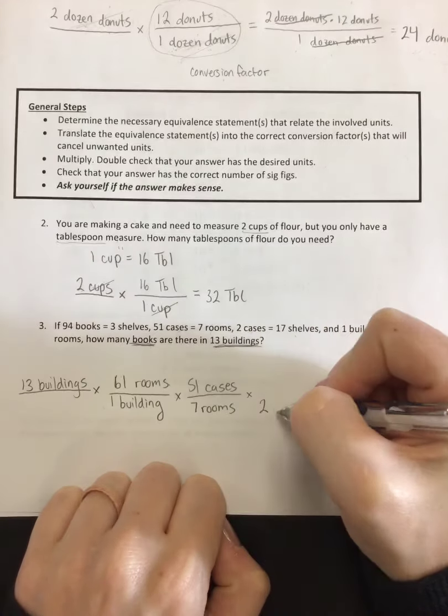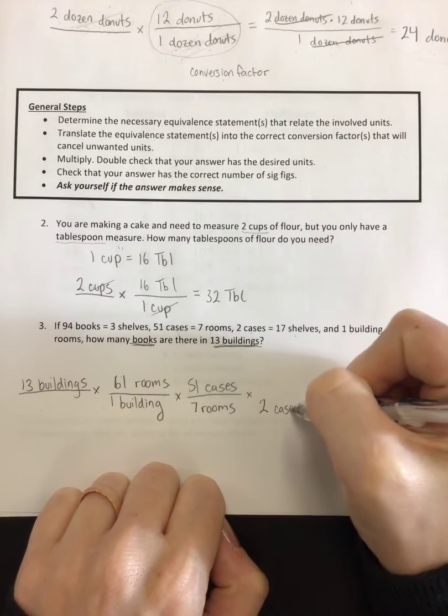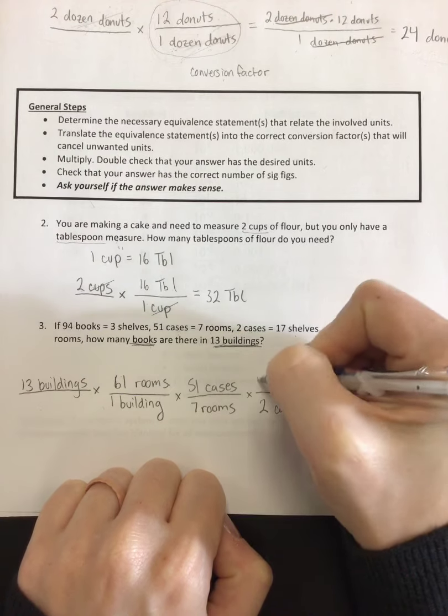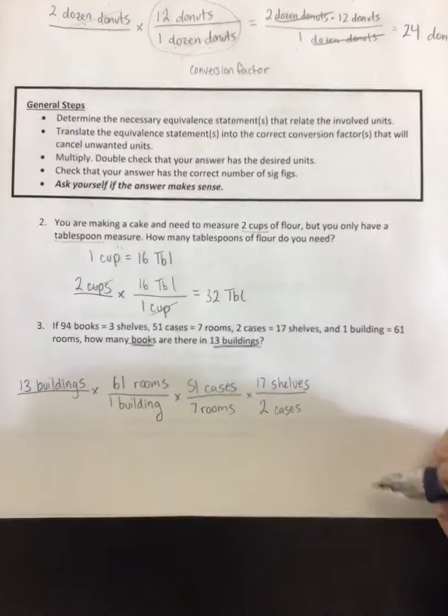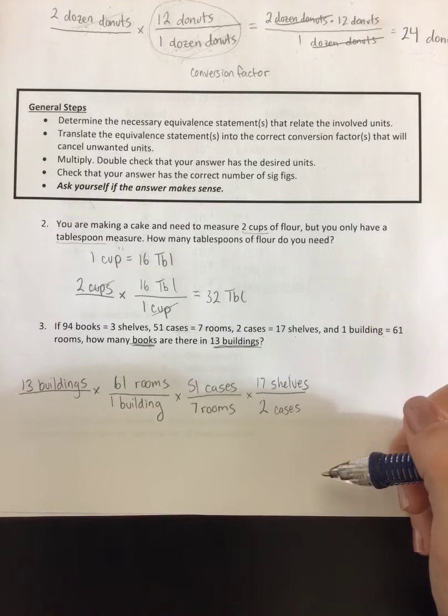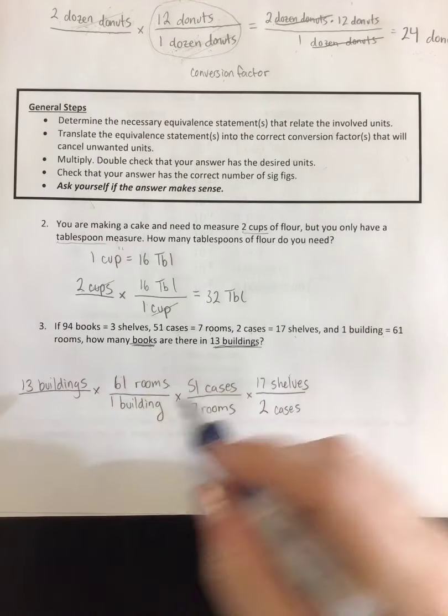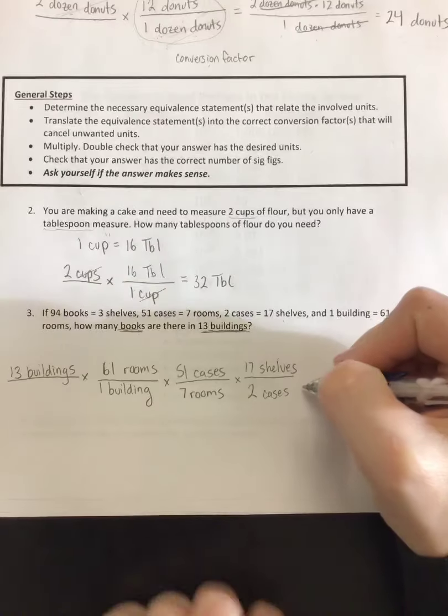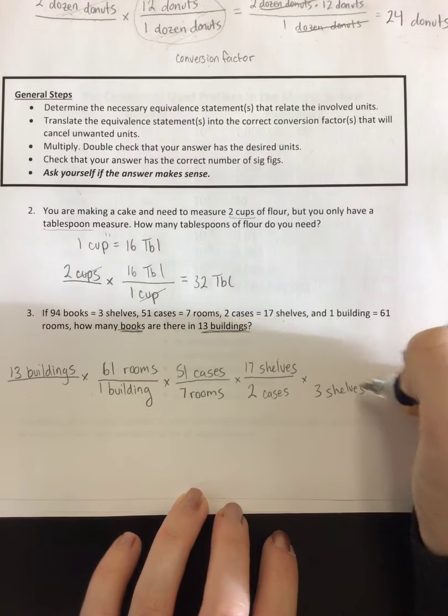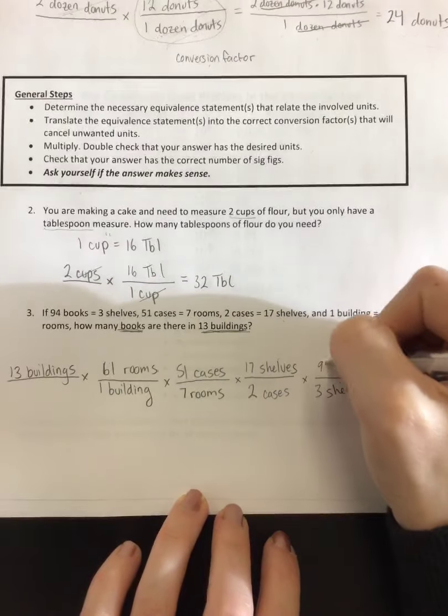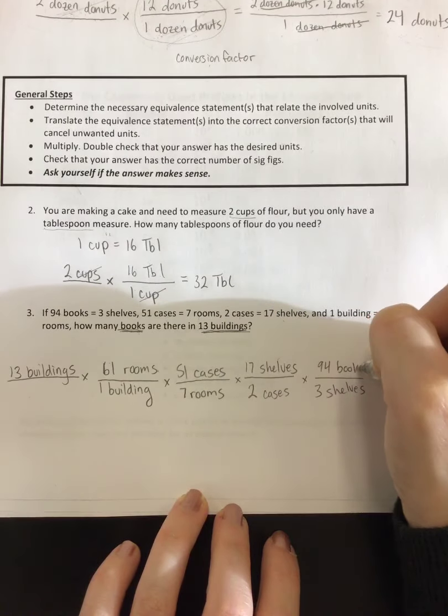Now I've got cases. Still not books. We could do better. So what do I know about cases? Two cases equals 17 shelves. Sure. Going through a lot here, but it's all relevant. We'll get there eventually. Hopefully. Two cases, 17 shelves. And now that I have shelves, can I get back to books? Yes, I can. And three shelves, there are 94 books.